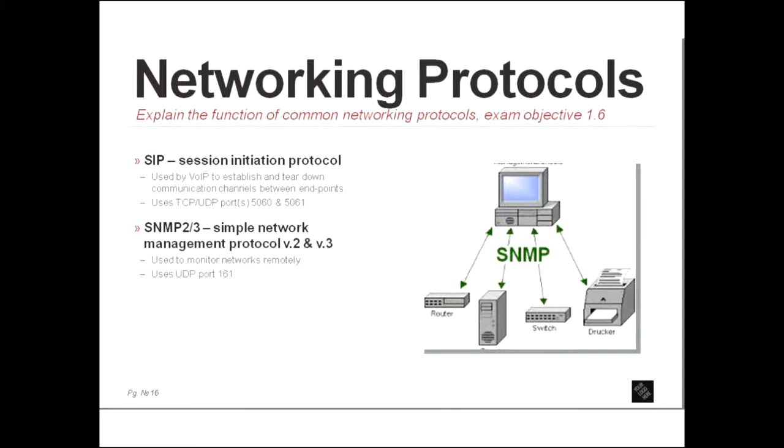Now we've got SNMP 2 and SNMP 3. That's simple network management protocol versions 2 and 3. Nobody really uses SNMP 1 anymore. They're both very similar. They both use UDP port 161. And that is how a network administrator monitors their network remotely. They set up what are called traps. And what a trap does is when an event happens or a trigger is triggered, it will send an SNMP message back to the controller so that the network administrator will know that things have happened and specific things have happened.